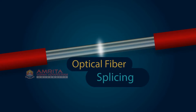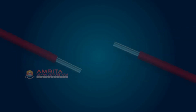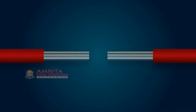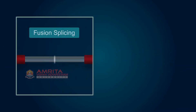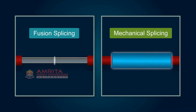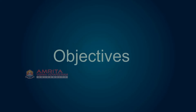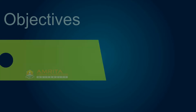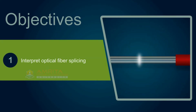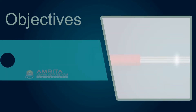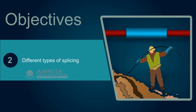Optical fiber splicing. Splices create a permanent joint between two fibers. In this session, we will learn more about splicing and their types. At the end of the session, you will be able to interpret optical fiber splicing and describe different types of splicing.